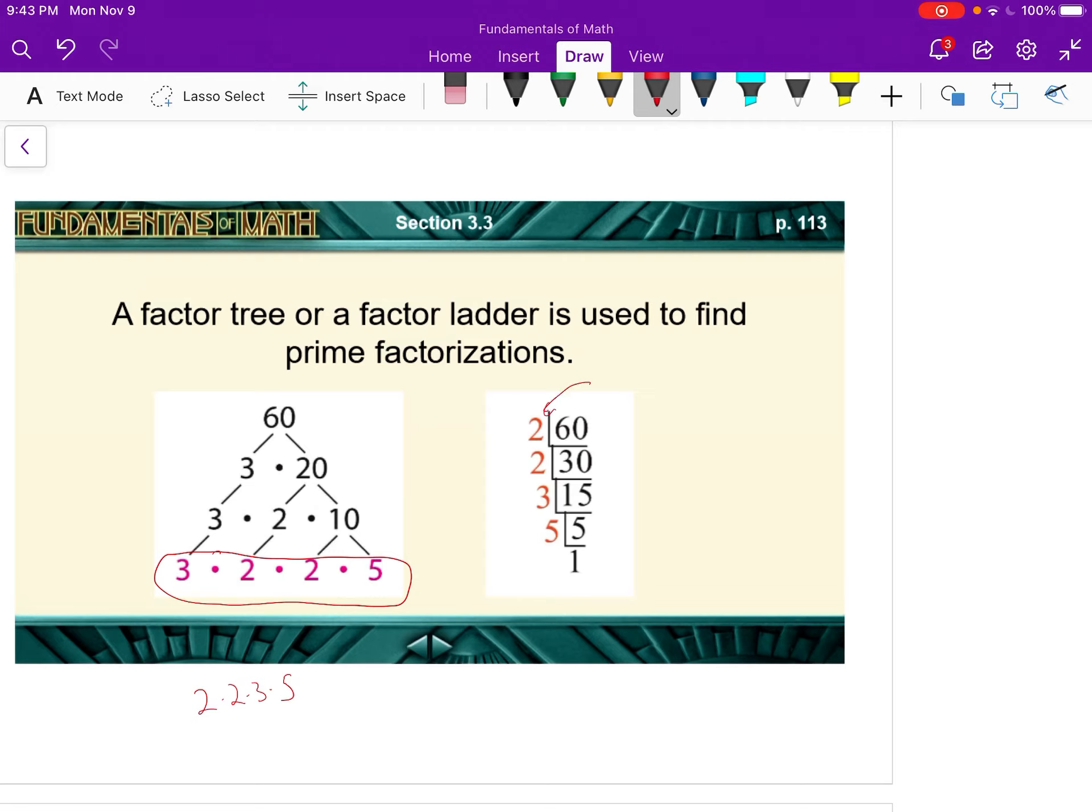You start with 60, and you start dividing by prime numbers. You start with the lowest, and we know 2 goes into 60 because it's even. 2 goes into 60 30 times. And then we think, oh well, 2 still goes into 30. 2 goes into 30 15 times. 2 does not go into 15. So we try 3, and 3 does go into 15 5 times. And so 5 goes into 5 once. So there are your prime factors of 60.